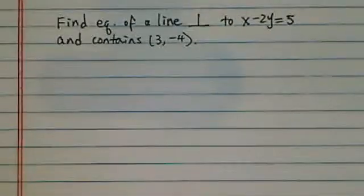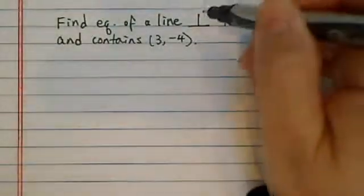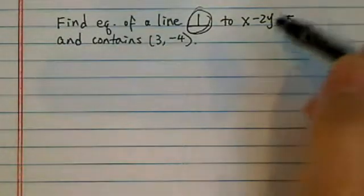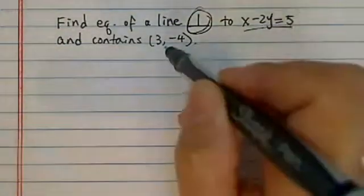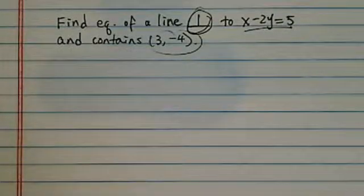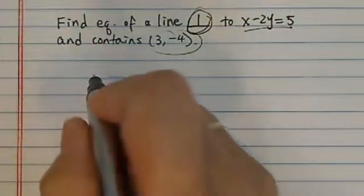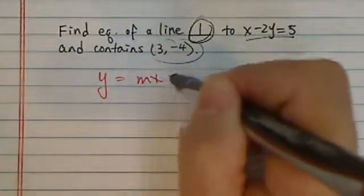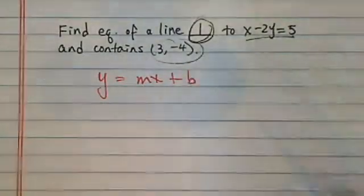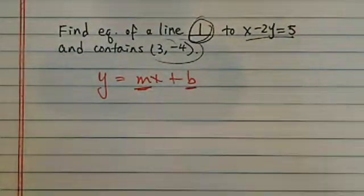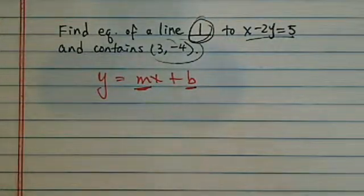We're asked to find the equation of a line that's perpendicular to a given line and contains a new point. There are two steps we need to do for a problem like this. Any line is described in the form y = mx + b, so of course we need to find m and we need to find b. Since we're not given m directly, we need to find it.